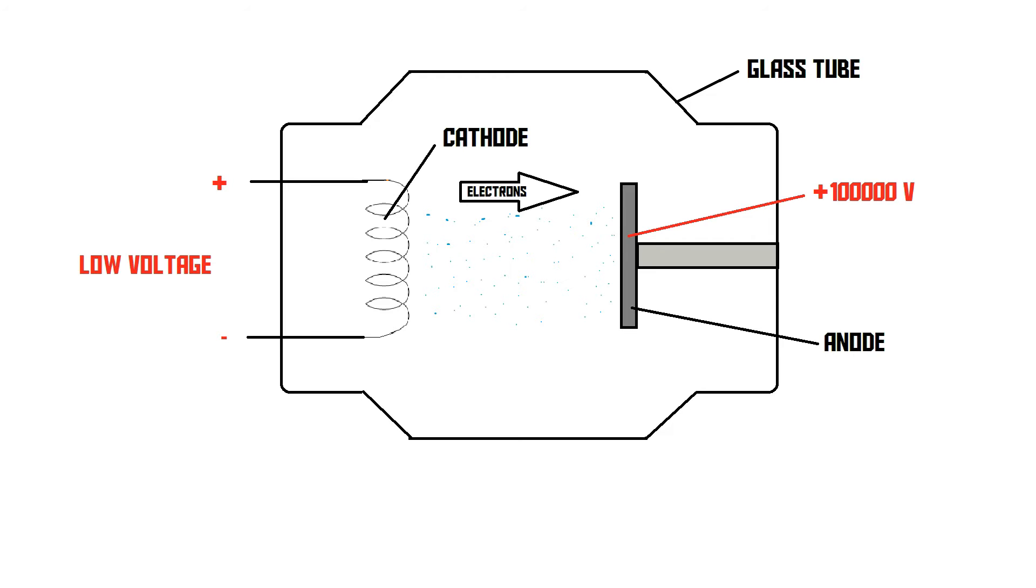The electrons then bump into the anode, and when they do, they release photons. These photons are the radiation produced by the tube. Here we have our X-rays.